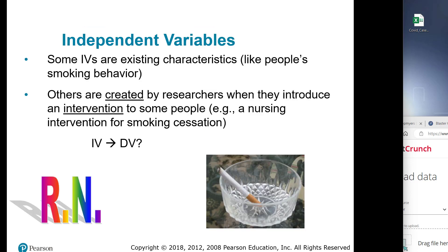Independent variables are characteristics, like what group they're in, what behaviors they're having. And then others are created by researchers. That is what group we put them in, the control group versus the experimental group.